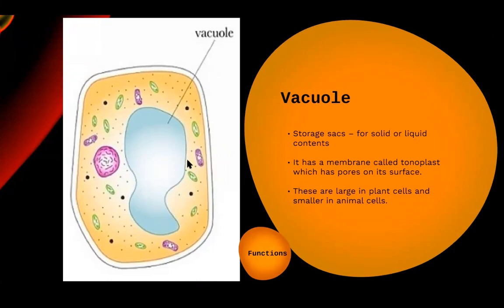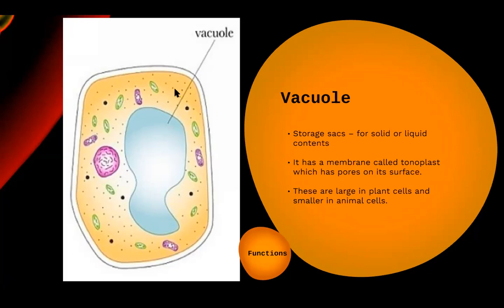In plant cells, the vacuole has a very distinct role. Vacuoles are basically storage sacs for solid or liquid content. Plant cells have a very large sac-like structure in the center that can take up 80 to 90% of the cell volume. There is a single membrane called the tonoplast, and this tonoplast has certain pores on its surface so that communication and different types of transportation can occur.